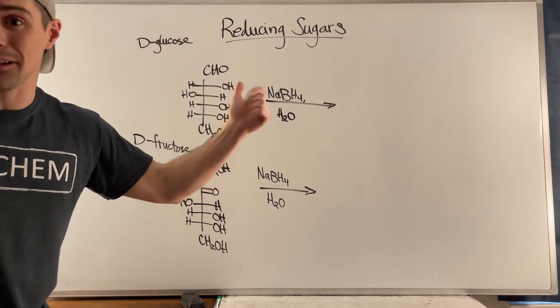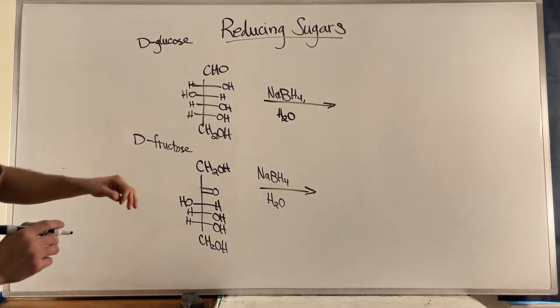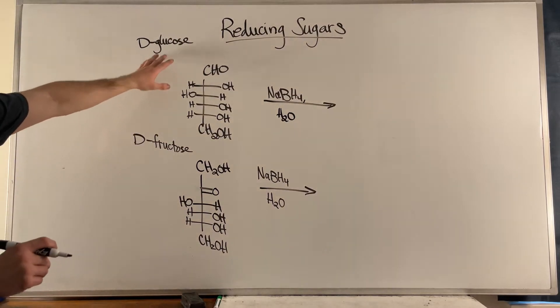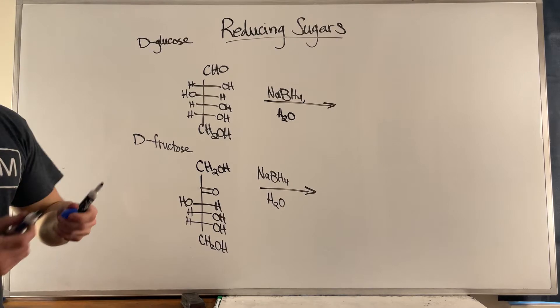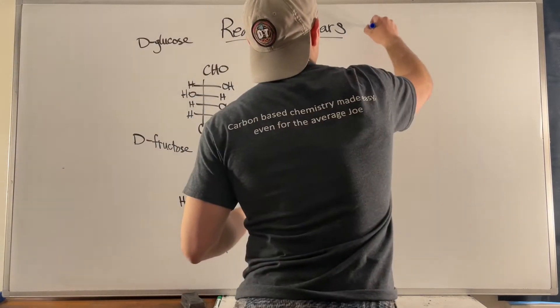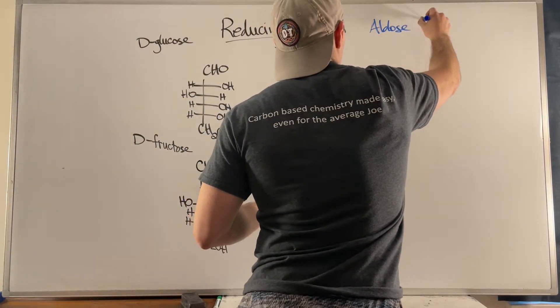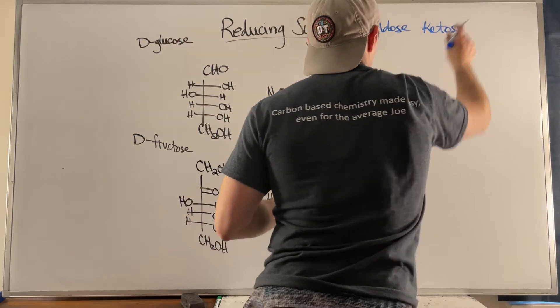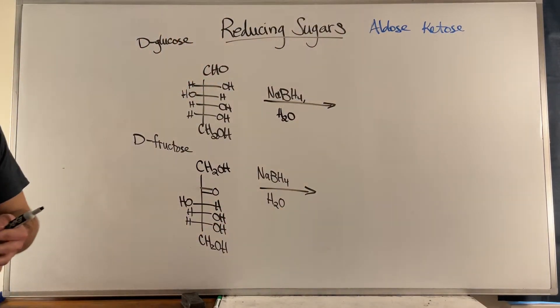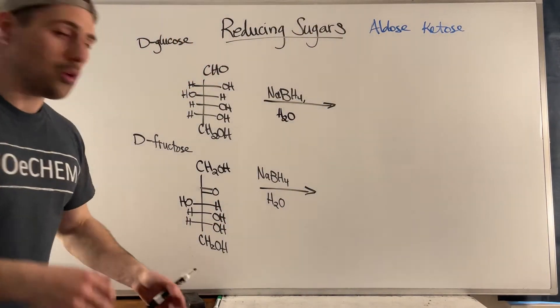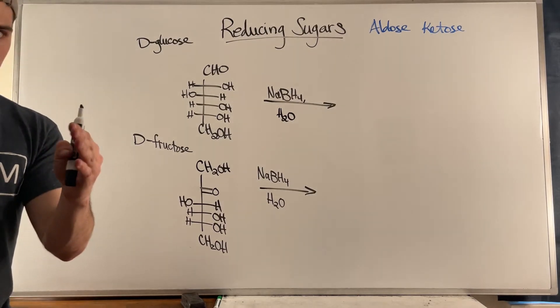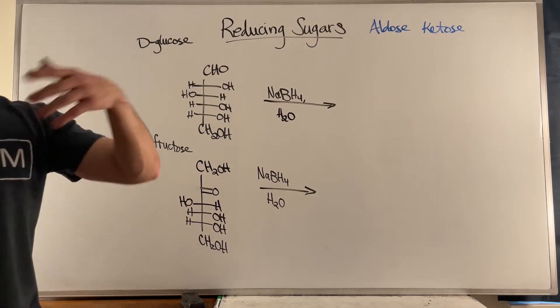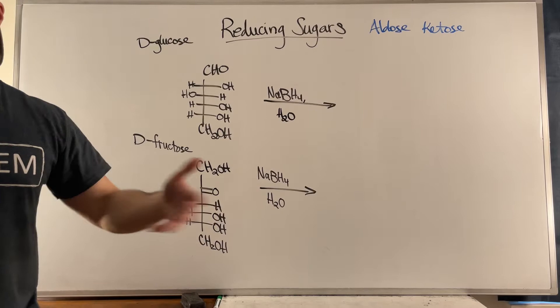I brought two familiar friends: D-glucose and D-fructose, because in reducing sugars it doesn't matter if you're doing this with an aldose or a ketose, they both apply. I want to show you not maybe the catch, but I want to make sure we don't forget some things associated with this reduction reaction.